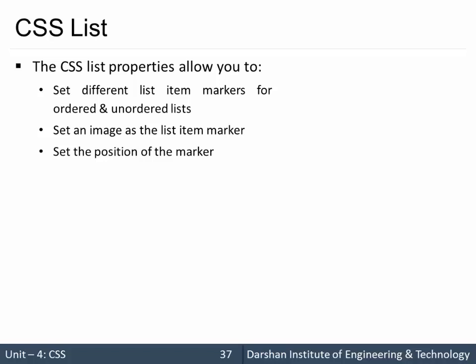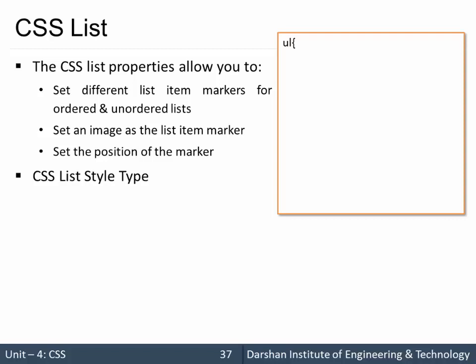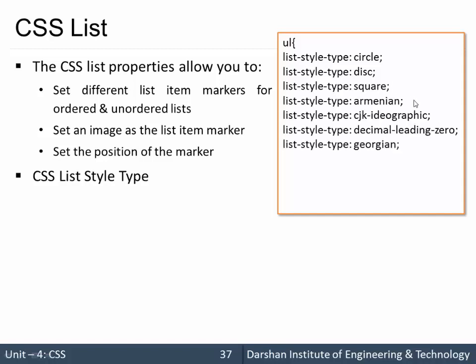Let's see all these properties one by one. First, we are going to see the type property: list-style-type. We can set many values for this property, like circle, disc, and square, which we used to do in ul. There are many more types available in CSS, and we will cover those in the upcoming demo.